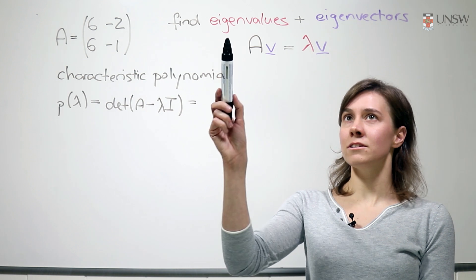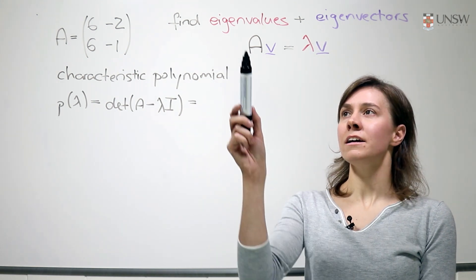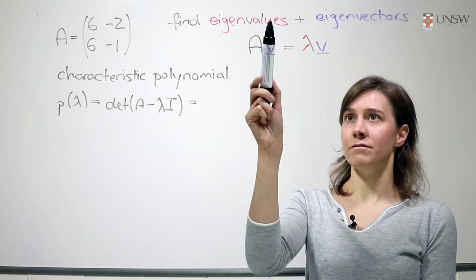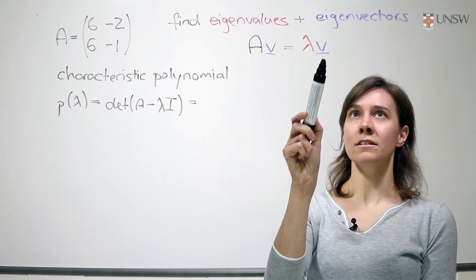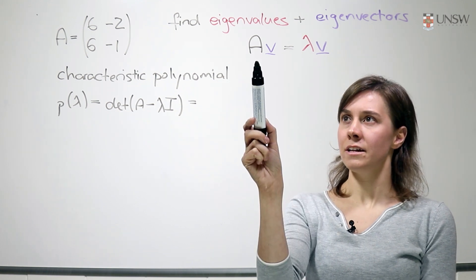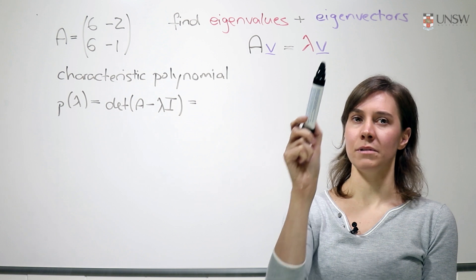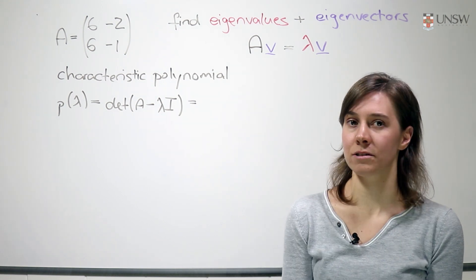Now the eigenvalues and eigenvectors are scalars lambda, the eigenvalues, and vectors V, the eigenvectors, so that A times V is equal to lambda times V, and we'd like to find those.